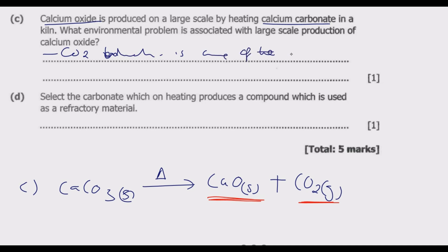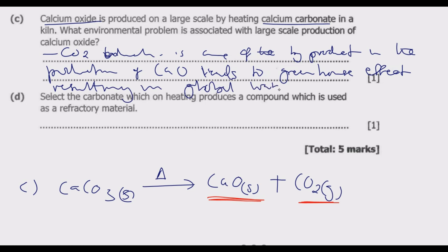Carbon dioxide which is one of the byproducts in the production of calcium oxide leads to greenhouse effect resulting in global warming or climate change.